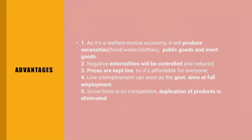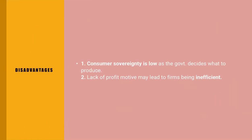Negative externalities are controlled and reduced. Prices are kept low so everyone can afford goods and services. There is low unemployment because the government aims at full employment as part of its macroeconomic objectives. Since there is no competition, duplication of products is eliminated. A disadvantage is that consumer sovereignty is low, as the government decides what to produce and consumers cannot influence this. There will also be a lack of profit motive, leading to inefficient firms.